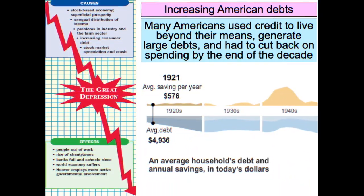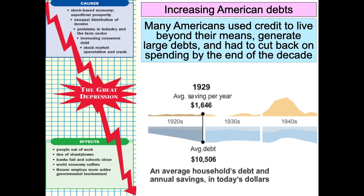One of the other key factors — the third key factor — is the fact that a lot of Americans by the end of the 1920s were in debt. When you go to buy a car, you need to borrow money. When you go to buy a refrigerator or a radio — all of these new durable goods — they cost a lot of money. And people borrowed money in order to buy them, which meant they had a lot of debt. Look at how much debt had increased from the early 1920s to the end of the 1920s. People weren't saving; they were borrowing money from the bank to buy all these products.